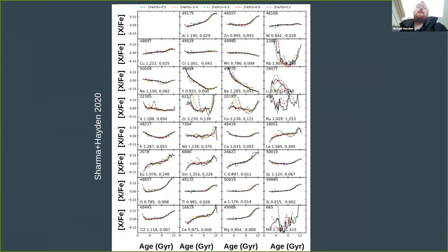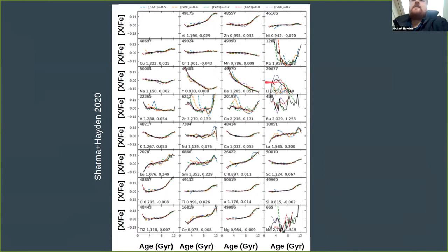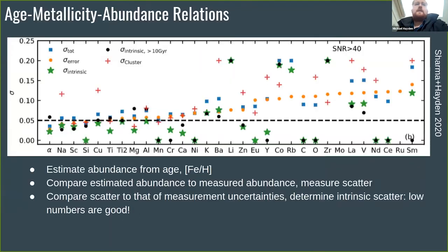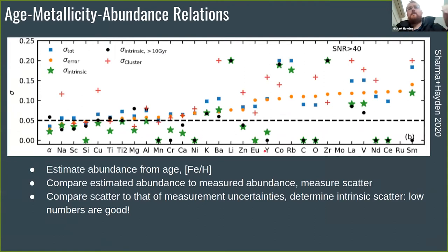With GALAH we have S-process, R-process, and many more elements. This is what Sanjeev and I did in 2020 — we see a nice yttrium-age relation for a range of metallicities, similarly for barium, the same alpha trend Melissa saw, and the R-process element europium. The scatter around these relations is very small — you can predict abundances just from age and metallicity alone, and the same holds for yttrium and europium.